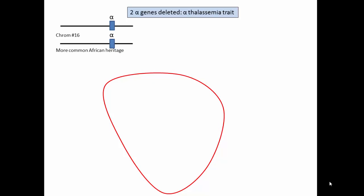When two alpha genes are deleted, the condition is alpha thalassemia trait. In individuals of African heritage, there is typically one alpha loss from each chromosome. In individuals of Asian heritage, the arrangement is often loss of two genes from one chromosome.